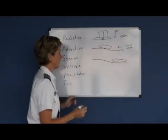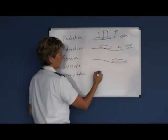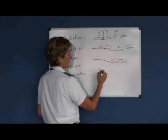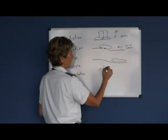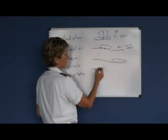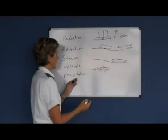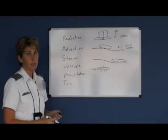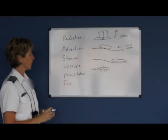Upslope fog is where air is forced up mountains. As the air is forced up the mountains, it creates mountain fog — so they call it upslope fog.